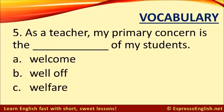Number five. As a teacher, my primary concern is the... of my students. A. Welcome. B. Well-off. Or C. Welfare. The correct answer is C. Welfare. As a teacher, my primary concern is the welfare of my students. Welfare is another word for well-being, referring to general health and happiness.